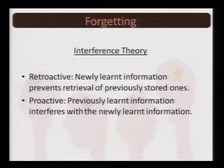The second theory of forgetting is the interference theory, which says there could be two types of interference. What I learnt in the past can interfere with my present learning, or what I am learning right now can be affected by whatever I will learn later on. Either pre or post experiences could affect my storage and retrieval process. There are two types: retroactive interference or proactive interference.